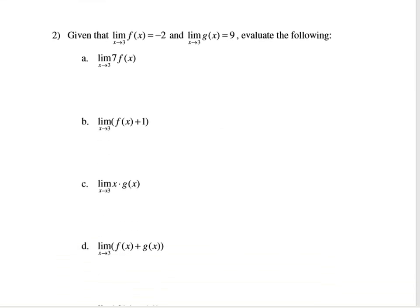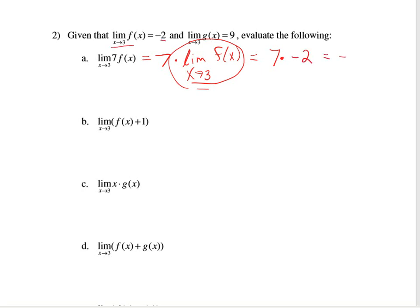For the next one, instead of having a graph we're going to look at doing it numerically. We have that the limit as x approaches 3 of f(x) is negative 2, and the limit as x approaches 3 of g(x) equals 9. For the first one, we want to evaluate the limit of 7·f(x) as x approaches 3. Per rule number 3, I can take that 7 and factor it out, then multiply it by the limit of f(x) as x approaches 3. That's 7 × (−2) = negative 14.